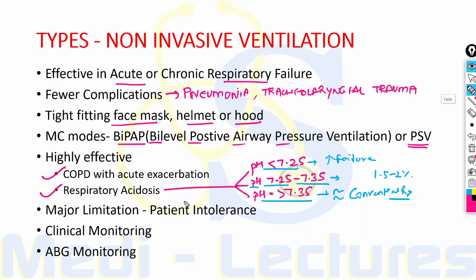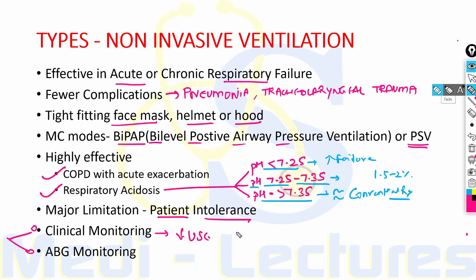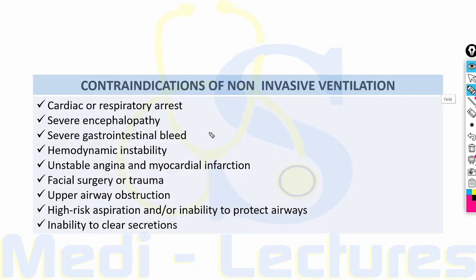The major limitation of NIV is patient intolerance, because the interface can cause both physical and psychological discomfort. Monitoring can be done by clinical monitoring and ABG monitoring. Clinical monitoring involves assessing use of accessory muscles of respiration — after NIV initiation, there should be decreased use of accessory muscles like scalene, sternocleidomastoid, and intercostals. ABG monitoring should also be done within hours to ensure NIV is beneficial.